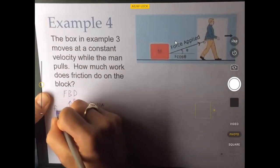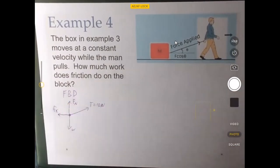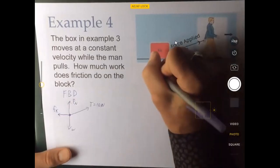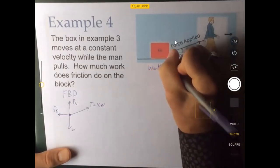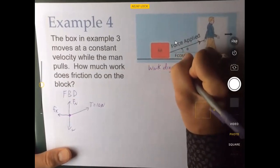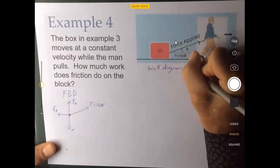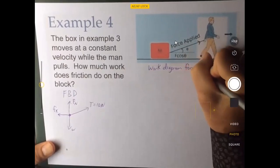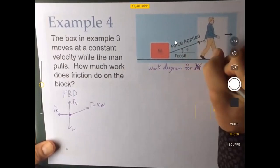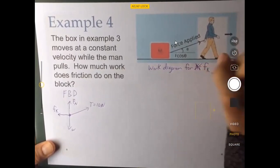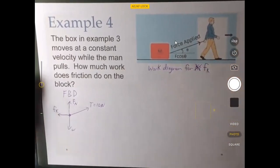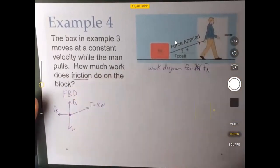There is a kinetic friction because the box is moving. And then let's draw a work diagram. Now we already drew a work diagram for the tension or the man's force, but let's draw a work diagram for the friction, F sub K. So we're analyzing the friction here.